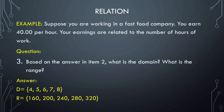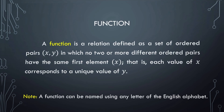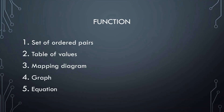Now, what is a function? A function is a relation defined as a set of ordered pairs (X, Y) in which no two or more different ordered pairs have the same first element X. That is, each value of X corresponds to a unique value of Y. A function can be named using any letter of the English alphabet. Functions can be represented in different ways: as a set of ordered pairs, a table of values, a mapping diagram, a graph, or an equation.